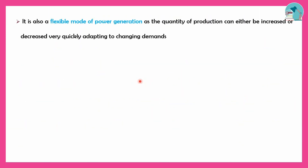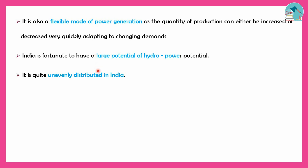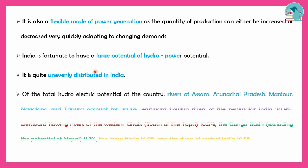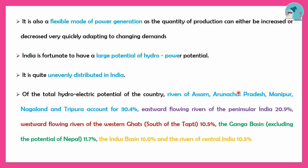Hydropower is a flexible mode of power generation with large potential. The distribution in India includes: Assam, Arunachal Pradesh, Manipur, Nagaland, and Tripura rivers at 30.4%; eastward flowing rivers of Peninsular India at 20.9%; westward flowing rivers of Western Ghats at 10.5%; Ganga Basin at 11.7%; Indus Basin at 16.0%; and Central India at 10.5%.